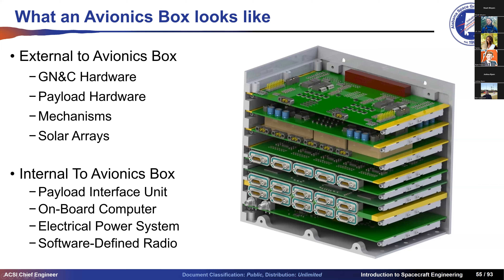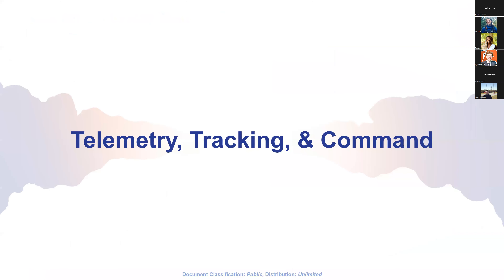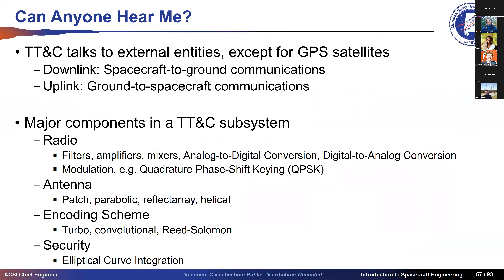An example avionics box developed for the Alabama Space Grant Consortium ABEX spacecraft integrates the payload interface unit, onboard computer, electrical power system, and software-defined radio in a single PCB stack. It includes 15-pin micro-D connectors for peripheral connectivity, DC-to-DC conversion hardware, battery management system, and maximum power point tracker board. ACT wedge-lock thermal management hardware is also included. Not shown are GN&C hardware, payload, mechanisms, deployment switches, and solar arrays.